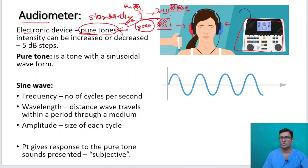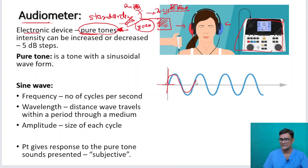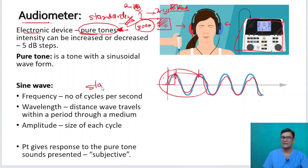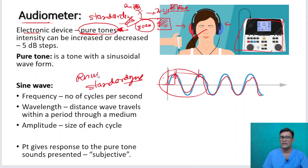We produce pure tones to standardize the sound. A pure tone is any sound with a sinusoidal waveform. If I produce a pure tone, it has a particular amplitude, a particular wavelength, and a particular frequency. By standardizing the sound presented to the patient's ears, your results will be comparable to the results of anyone who does audiometry anywhere in the world.